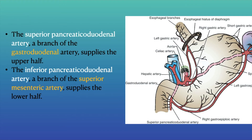The superior pancreaticoduodenal artery, which is a branch of the gastroduodenal artery, supplies the upper half of the duodenum. The inferior pancreaticoduodenal artery, which is a branch of the superior mesenteric artery, supplies the lower half.